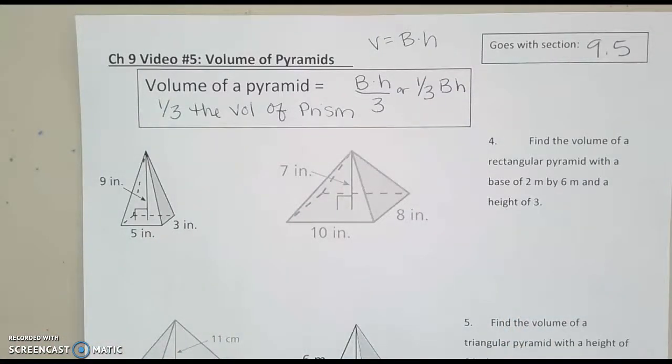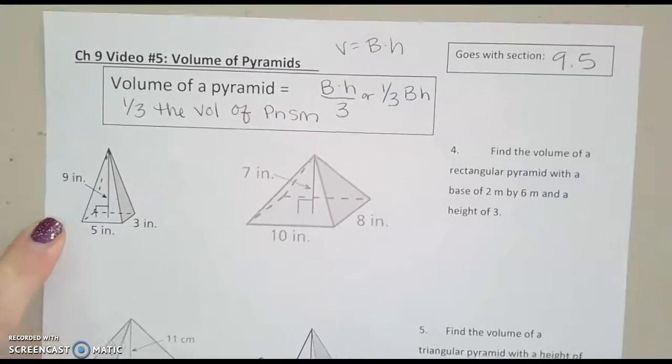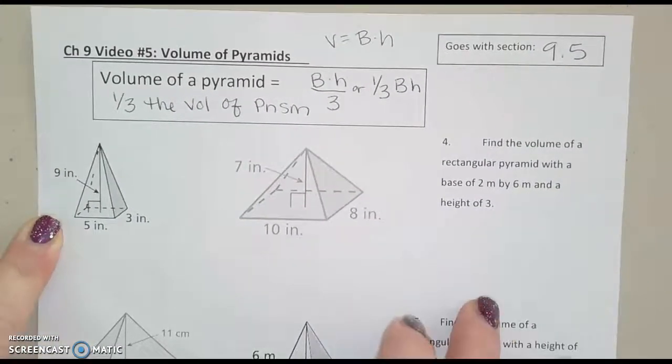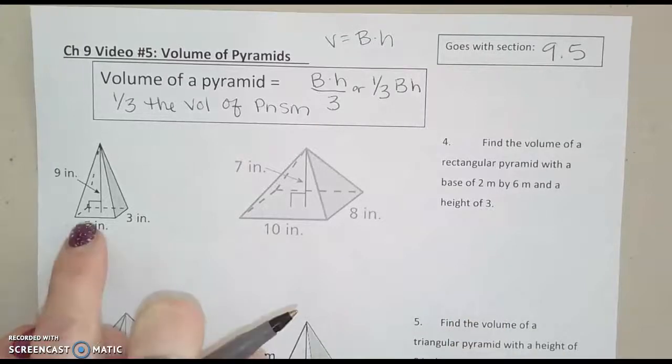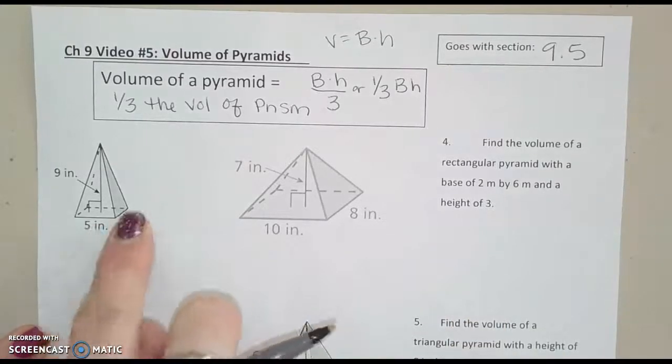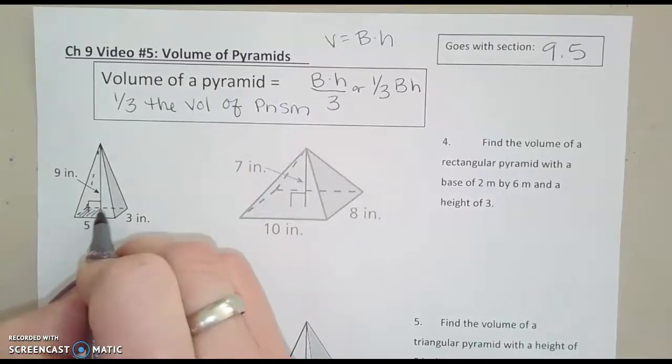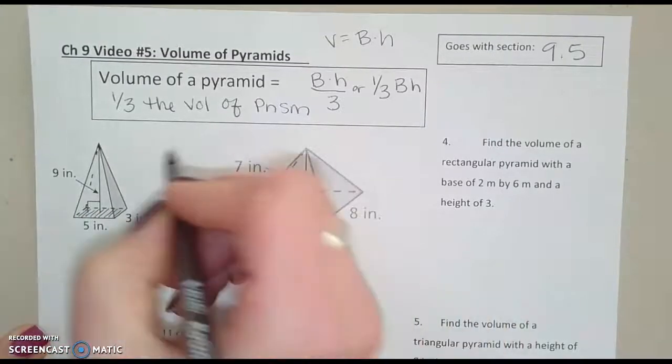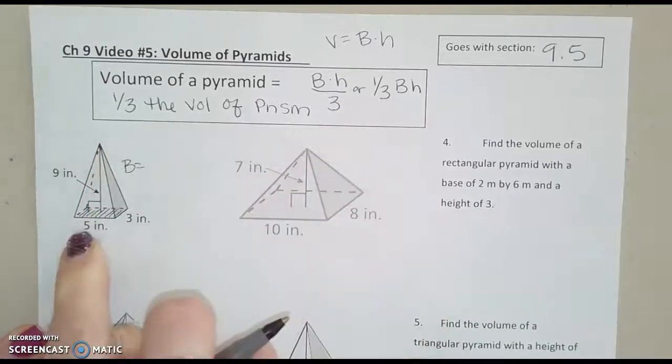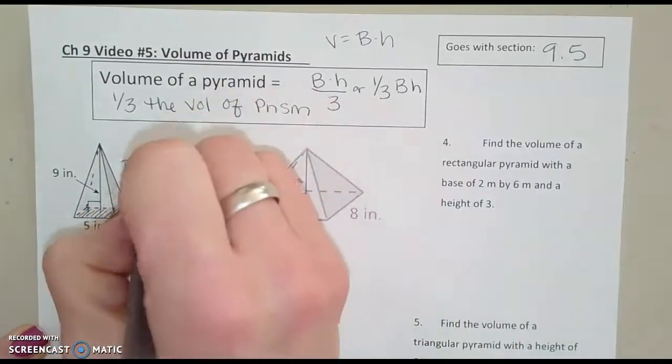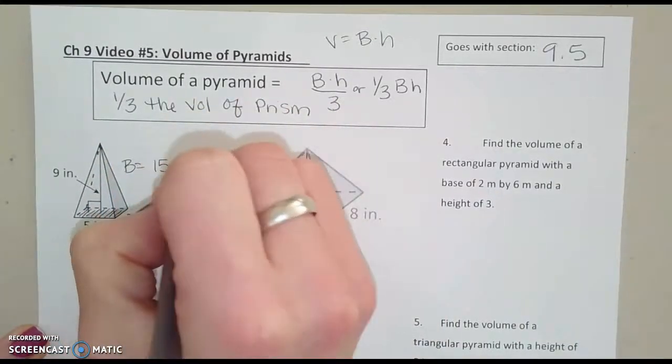Okay, so we'll start with the square pyramids here. I'll do one. This one says we have a rectangular base. So we're going to find the area, capital B, of this rectangular base. Well, I know for a rectangle, it's just 5 times 3, so 15 inches squared.